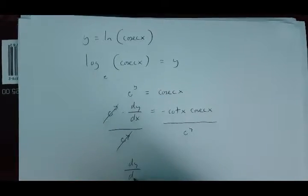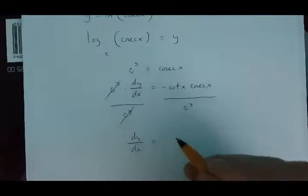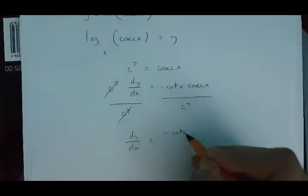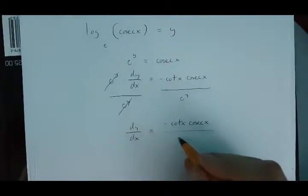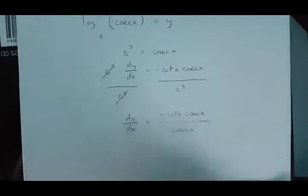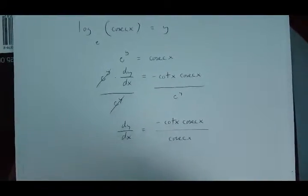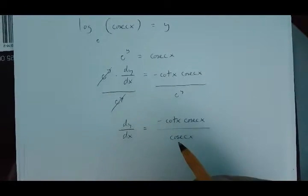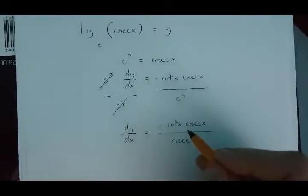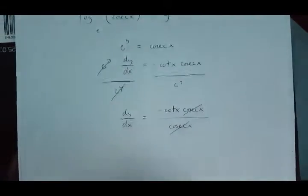So, dy over dx is going to be minus cot x times cosec x over cosec x. Now that we've got cosec x up here and a cosec x down here, they are going to cancel each other out.